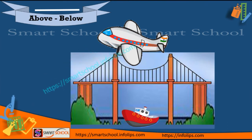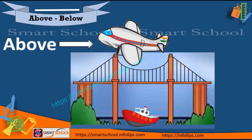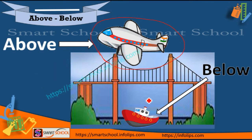Now we will see above and below. Tell me which one is above and which one is below. An aeroplane is above and a boat is below. Yes, this aeroplane is above and this boat is below.